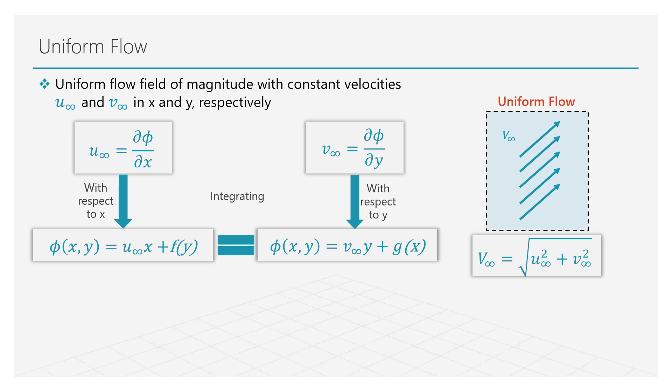By comparing these two relations, we can write the functions f of y and g of x as shown here. Substituting for these in the velocity potential equation, we get the following governing equation for the uniform flow.